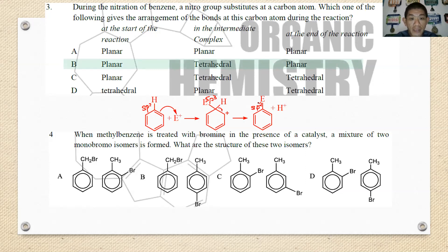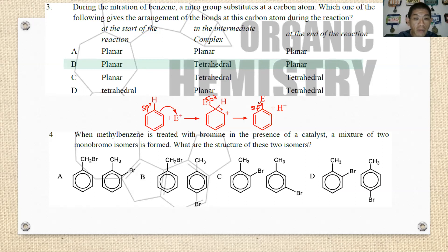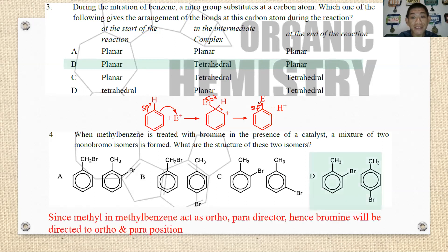Number four: when methylbenzene is treated with bromine in the presence of a catalyst, a mixture of two monobromo substitution products is formed. Because the methyl group in methylbenzene acts as an ortho-para director, the two products are at the ortho and para positions. The best answer is D.